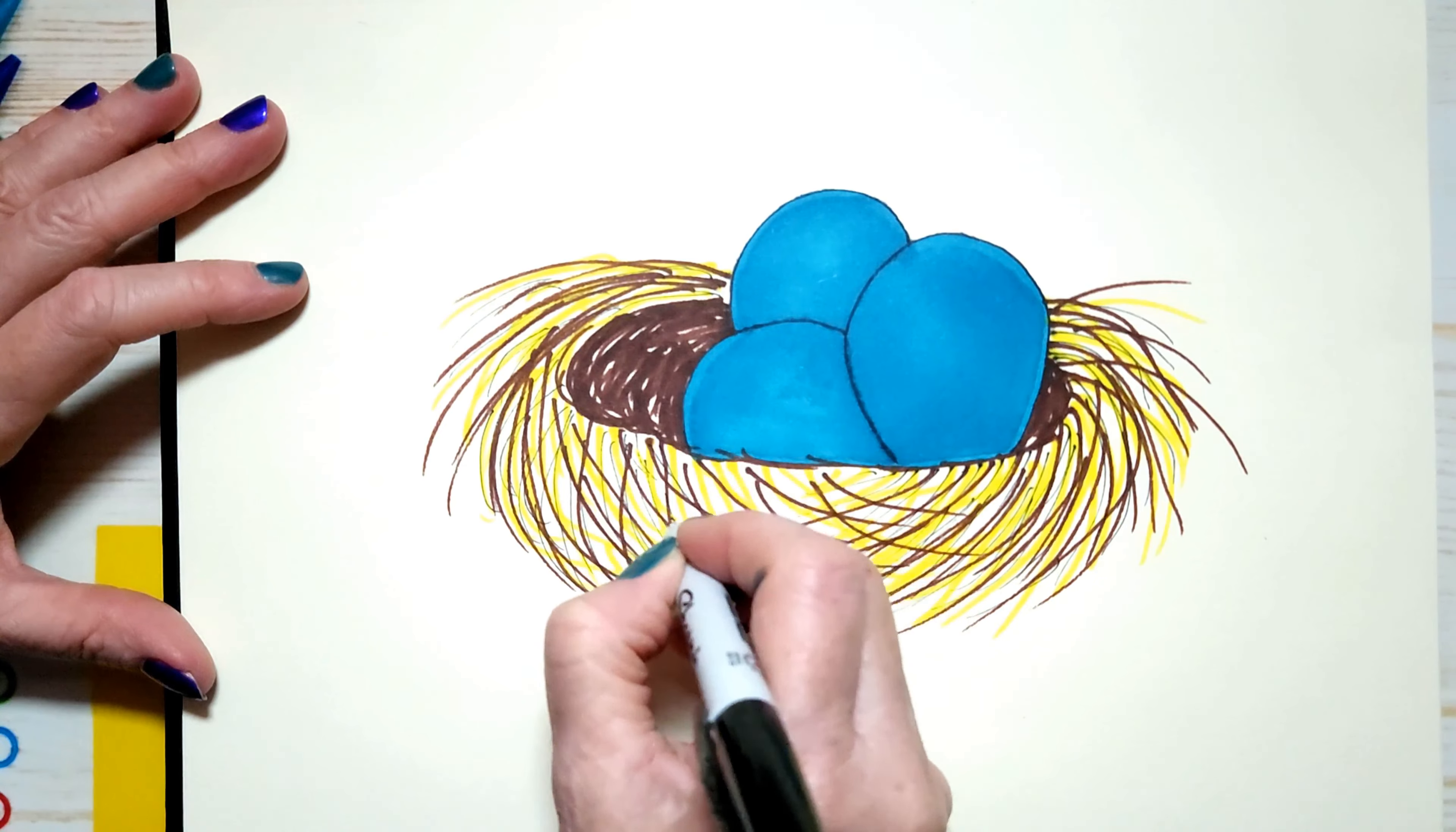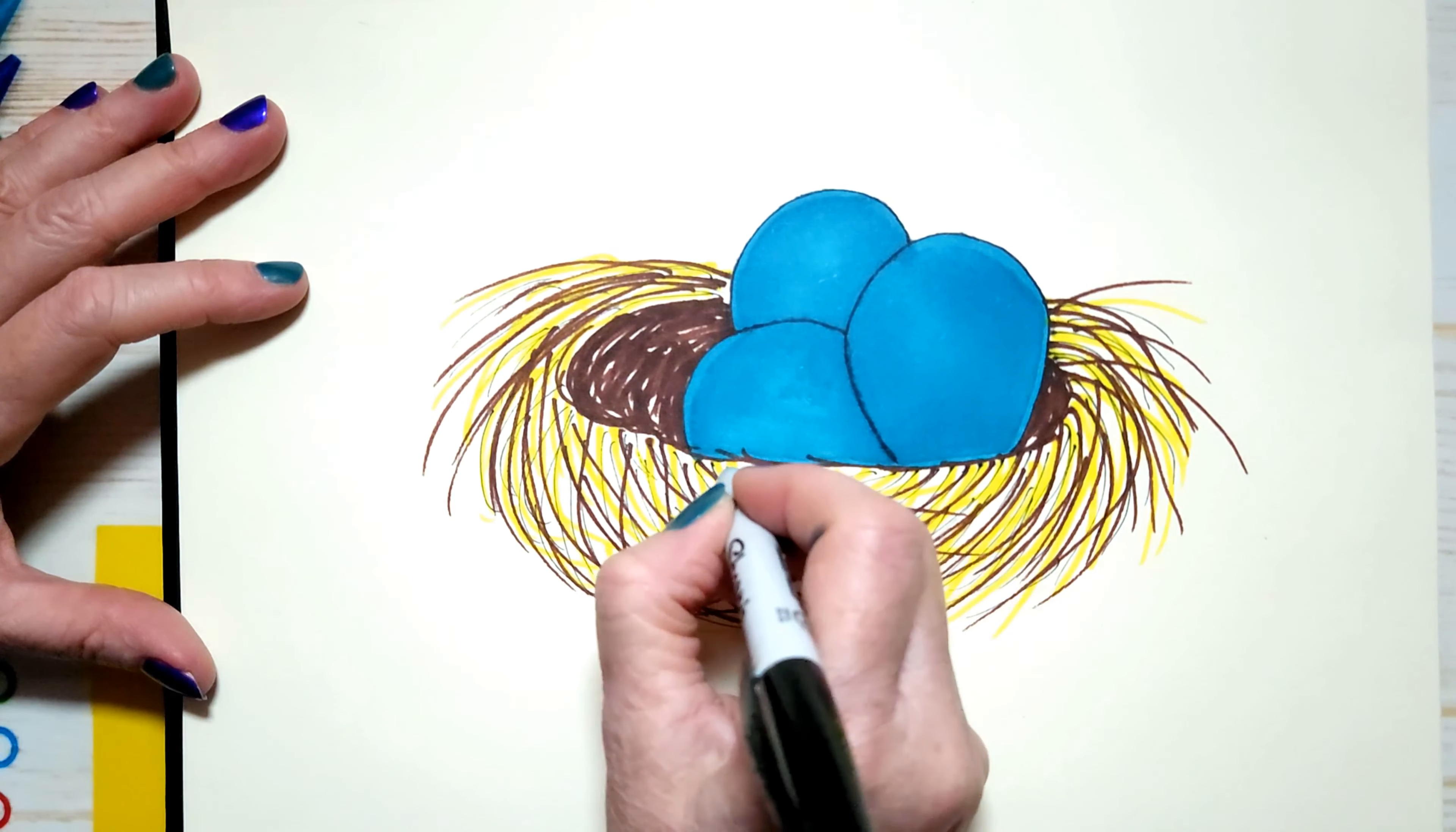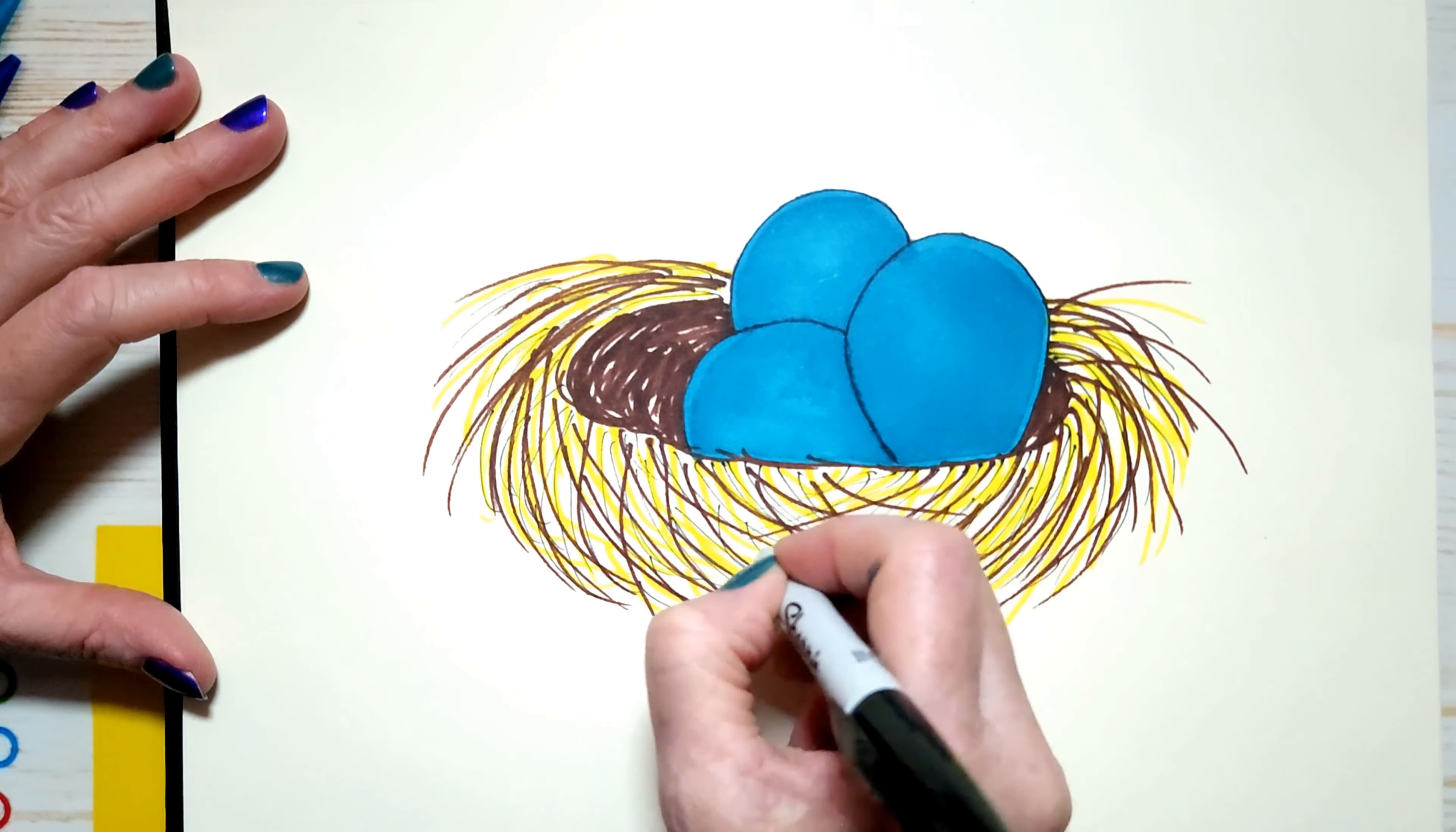And you can put as much color in here as you want. If you think it needs more yellow, add more yellow. Same thing for the brown. You could probably also put a little orange in there. That would look nice.